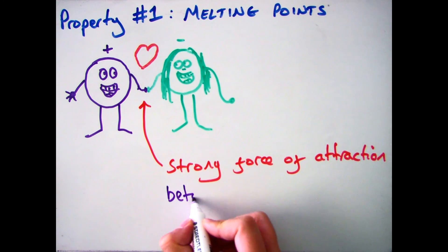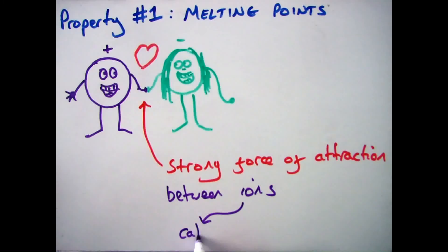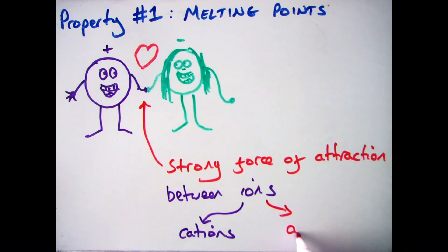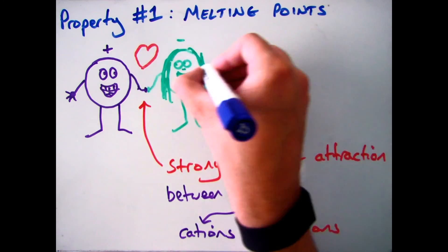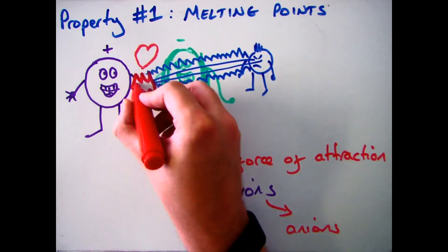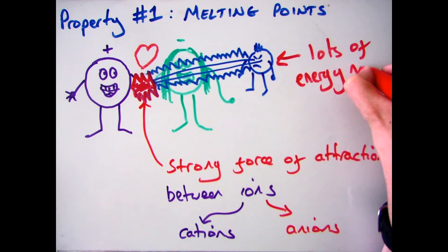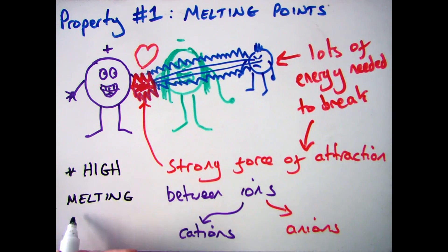This is due to the fact there is a strong force of attraction between the positive cations and the negative anions. This means that lots of energy is needed to break those strong forces of attraction, which is the reason they have high melting points and boiling points.